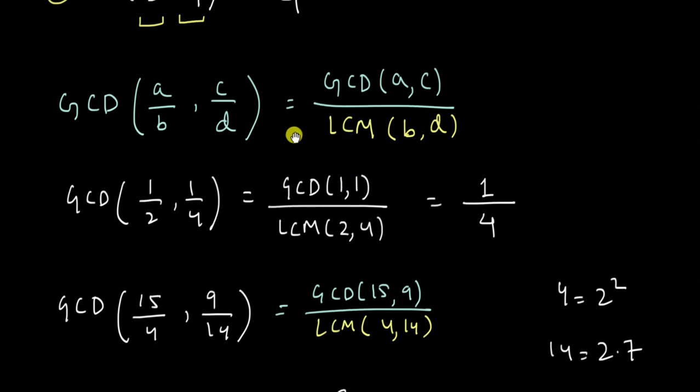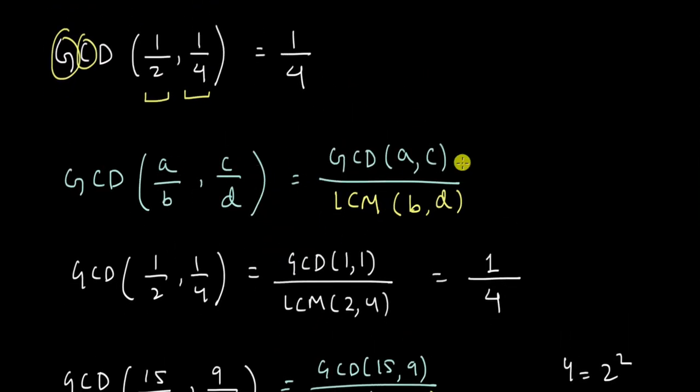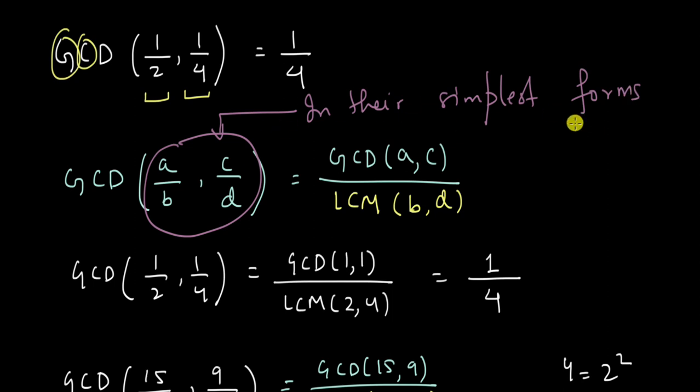But I want to lay out a word of caution here. This trick works if these fractions are in their simplest forms. That means there are no cancellations remaining. We cannot simplify A by B further. Let me show you with an example.